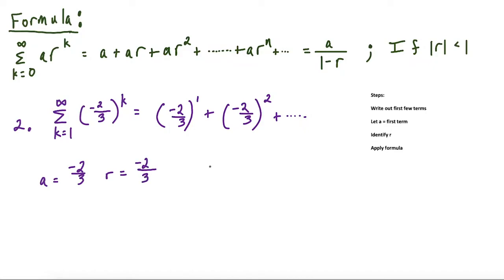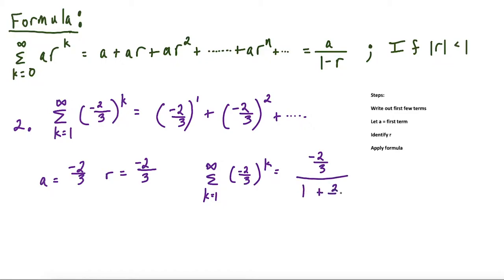To evaluate this series, we plug into the formula. This equals a, which is negative two thirds, divided by one minus negative two thirds, which changes to one plus two thirds. So we have negative two thirds over three over three plus two over three, which is five over three. Simplifying, this works out to negative two over five.